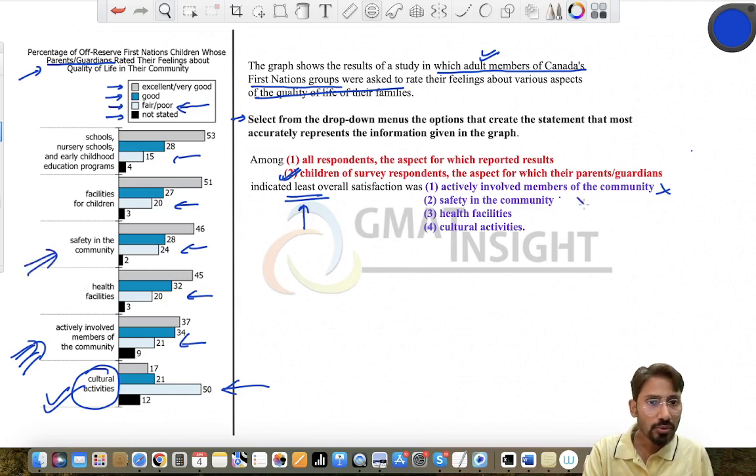No. Health facilities? So facilities for children and health facilities? No, this bar is also not the biggest. The cultural activities—as we can see that the cultural activities has the biggest bar for the least satisfaction in this category.